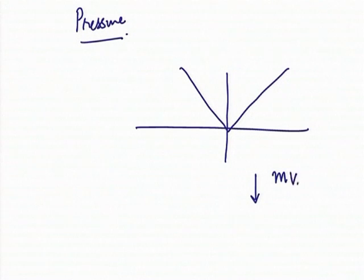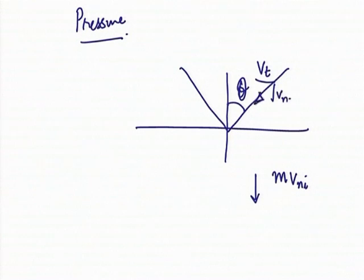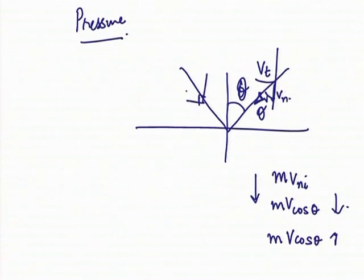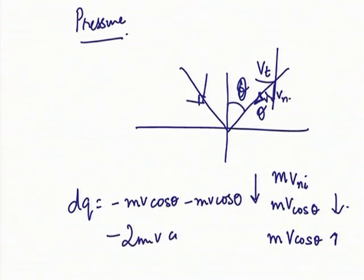Initially the momentum was m times v_normal. If this is angle theta, then the normal component is v cos theta. So the initial momentum going down is m·v·cos(theta), and when it is going up after reflection it is m·v·cos(theta) in the opposite direction. So if one collision has occurred, the change in momentum downward is: minus m·v·cos(theta) minus m·v·cos(theta) equals minus 2·m·v·cos(theta). This is the change in momentum per collision.